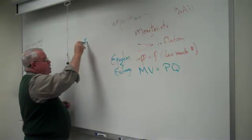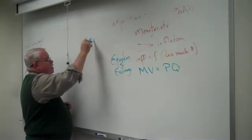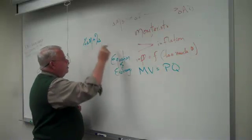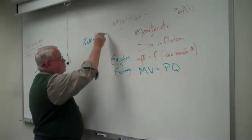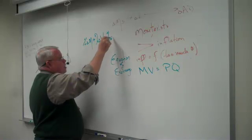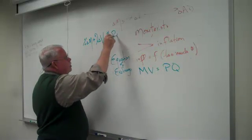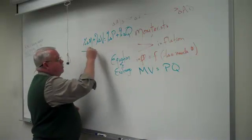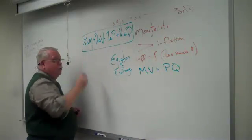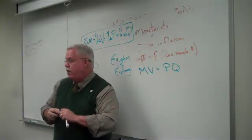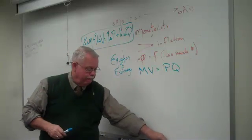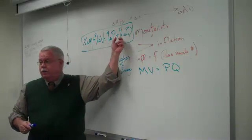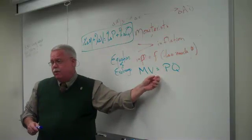It's going to look like this. The percentage change in the money supply plus the percentage change in velocity equals the percentage change in price or inflation plus the percentage change in output. This is the equation you're going to need to be able to work with and explain on the exam. We won't do that today.